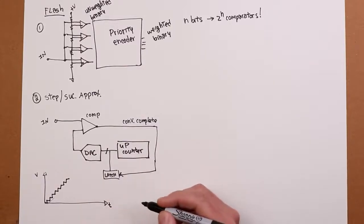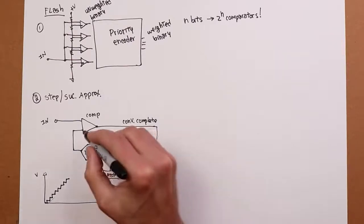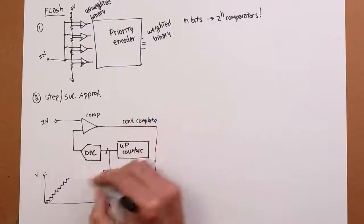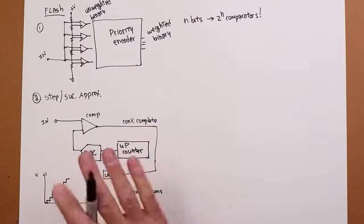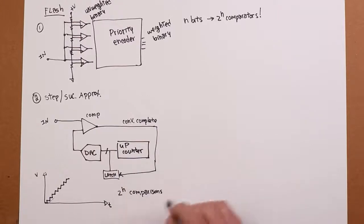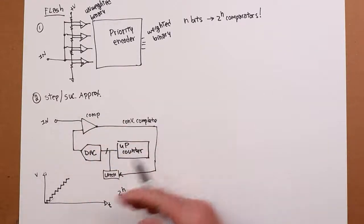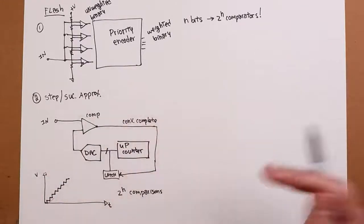Problem with this is it's crazy slow. Because again, for n bits, you need 2 to the n comparisons. So instead of comparators, you need comparisons. If your DAC was a one microsecond DAC and you had a 16-bit converter, that's over 65,000 individual comparisons. So it would be 65,000 microseconds or 65 milliseconds. That's great if what you're trying to digitize is a 5-hertz signal, but it's not going to work for audio. That's for darn sure.